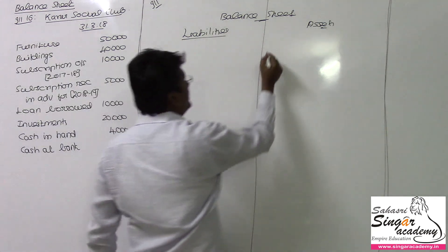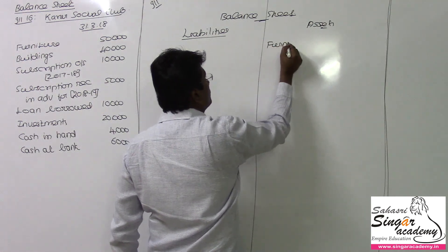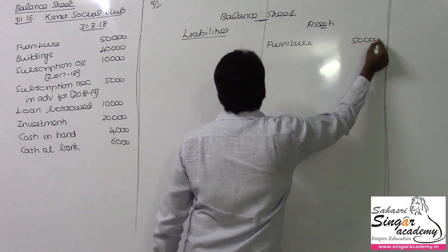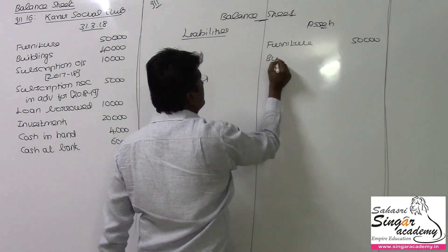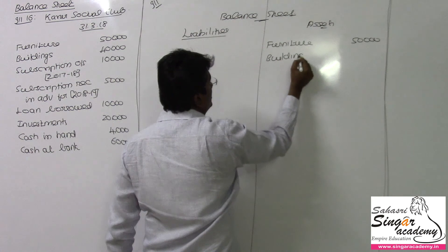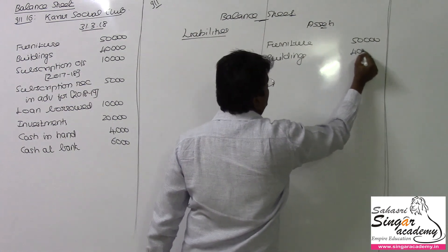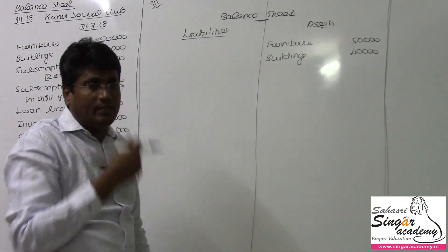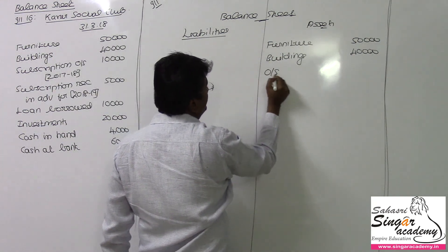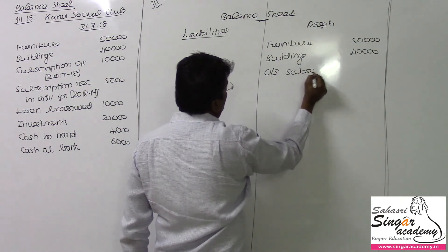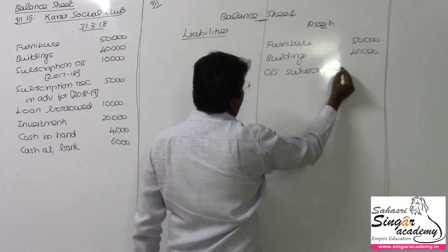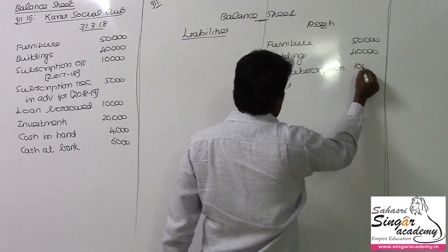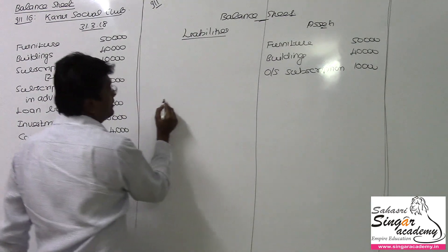On the assets side: furniture is 50,000 rupees, buildings are 40,000 rupees, and outstanding subscription — which you can label as outstanding subscription in the balance sheet of Karur Social Club — is 10,000 rupees.